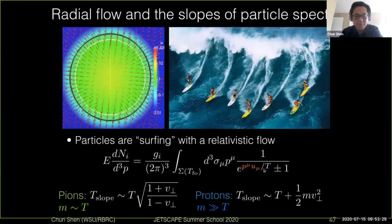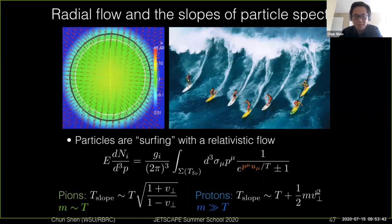Your temperature, or the slope of your particle spectrum, will look like a relativistic blue shift. For protons, the mass of the proton is actually much larger than the temperature, so you are sitting in the non-relativistic region — you basically just have a momentum addition to your temperatures.